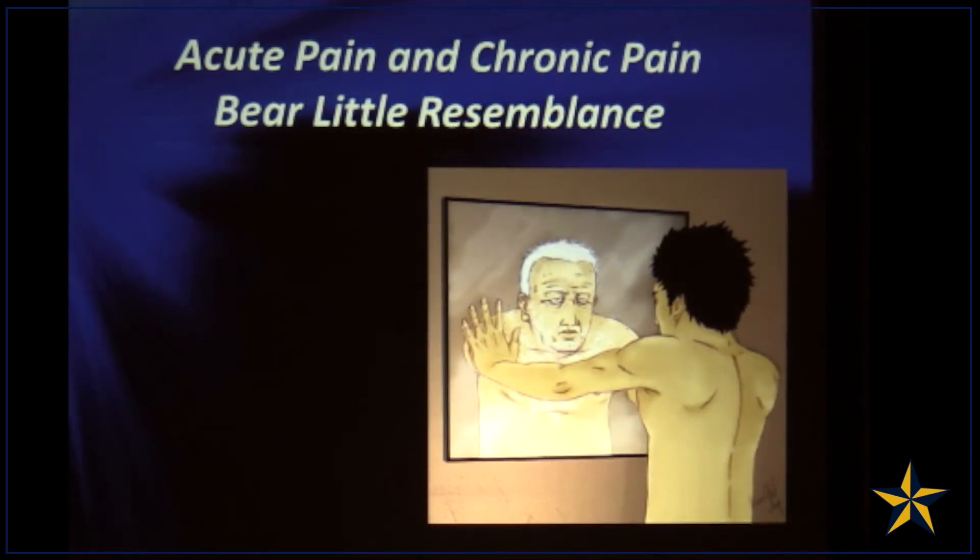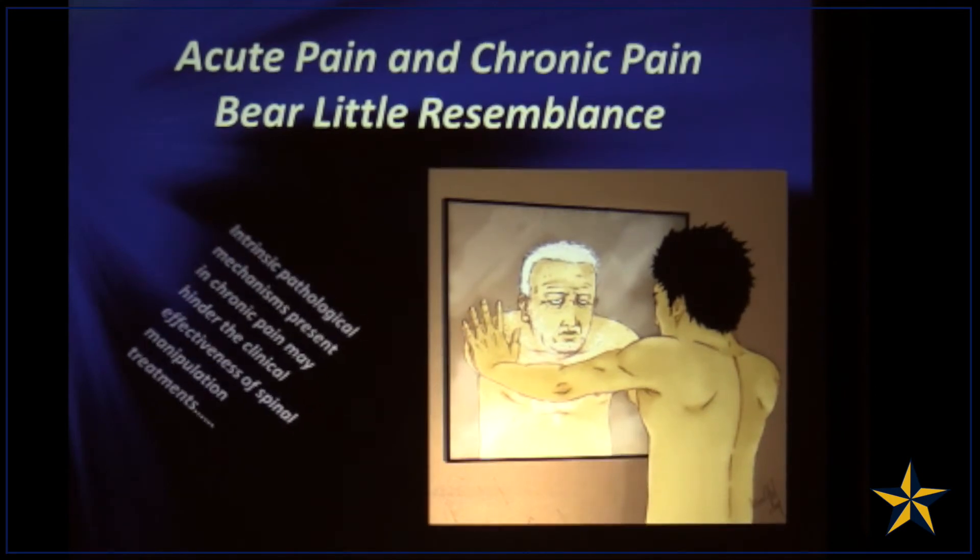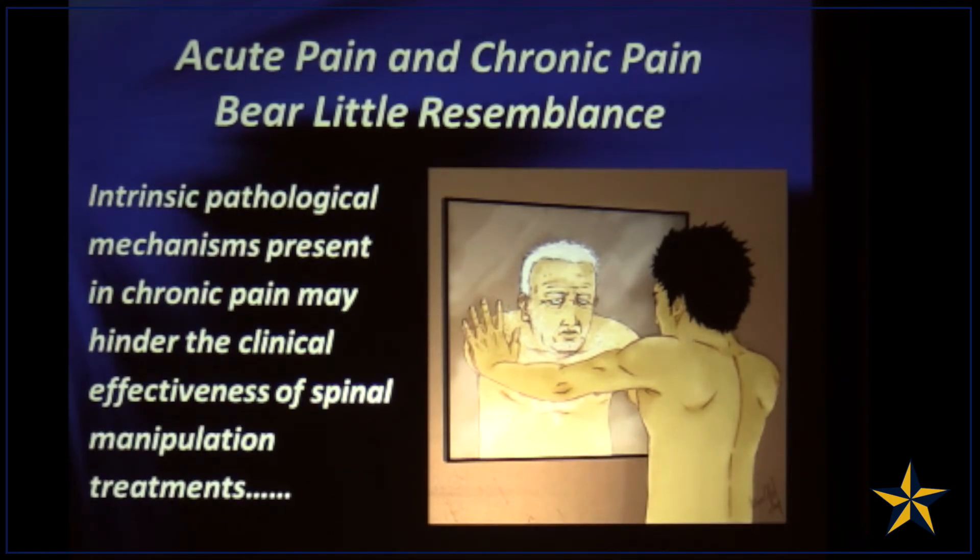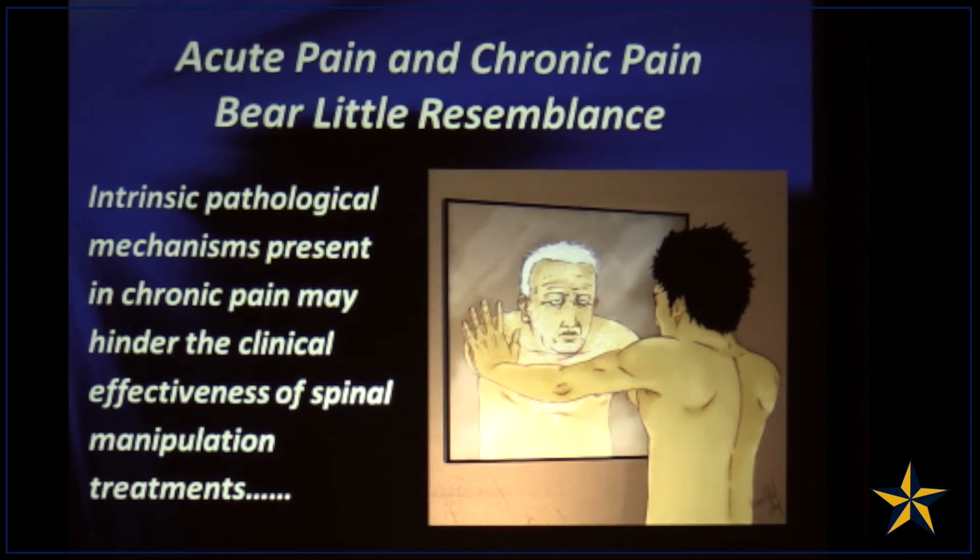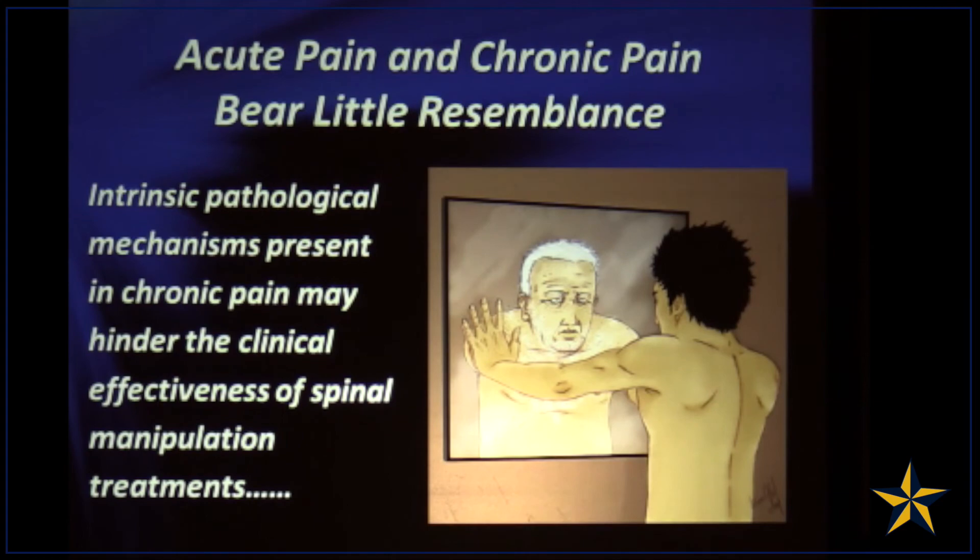But acute and chronic pain bear little resemblance to each other. You see, there are intrinsic pathological mechanisms present in chronic pain that may hinder the effectiveness of spinal manipulation, because the circuitry, in effect, changes in the way it functions.